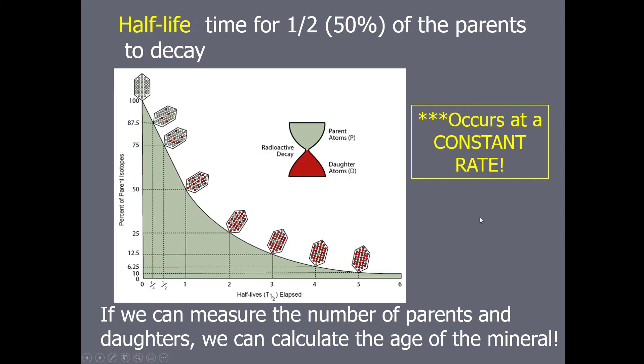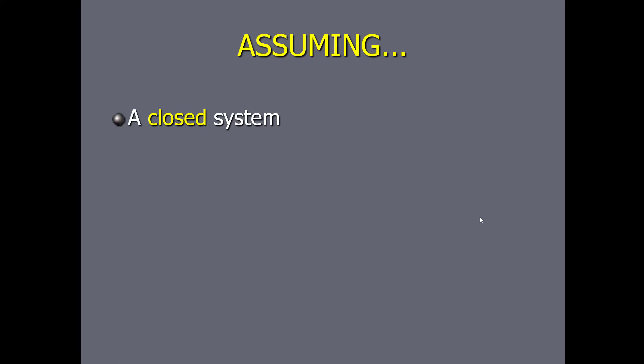We can only do this if certain parameters — assumptions — are kept and are true in order to get an accurate age. The first assumption, which is geologically the hardest to guarantee, is that you have a closed system. The mineral you're sampling has to be in a rock that basically isn't eroding, because erosion could cause you to lose daughters and parents. It also means no new parents or daughters are brought into the rock by groundwater.